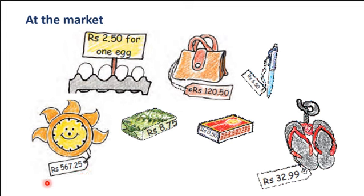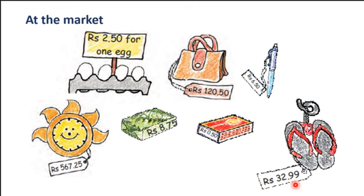Here there is a watch whose price is rupees 567.25, that means 567 rupees 25 paise. There is soap at rupees 8.75, that means 8 rupees 75 paise. There is a match box whose cost is rupees 0.50, that means 50 paise. There are slippers — one pair — whose cost is rupees 32.99. Some of these items like the watch and pen you can still get, but their costs have changed. Items like the egg, soap, match box, handbag and slippers are still available.